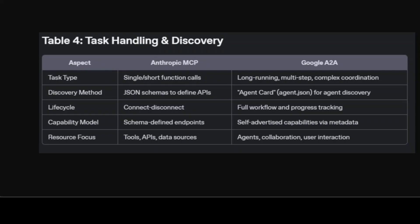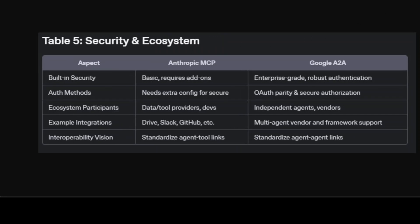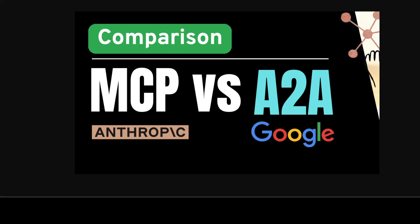Where MCP excels at making tools discoverable to agents, A2A focuses on making agents discoverable to one another. Security is also a key area of difference: MCP requires secure configurations but doesn't natively provide robust agent-to-agent security, whereas A2A incorporates enterprise-grade security including modern authentication standards like OAuth. The MCP ecosystem is growing with tool providers and data integrations from Google Drive to GitHub, while A2A is aimed at fostering rich collaborative exchanges across agents built by different vendors and frameworks.